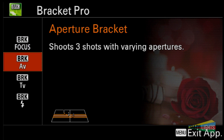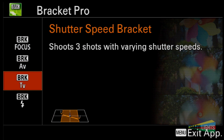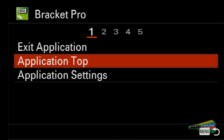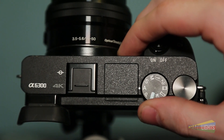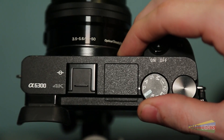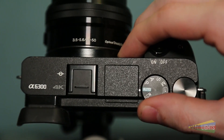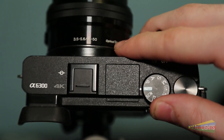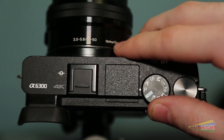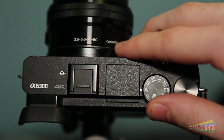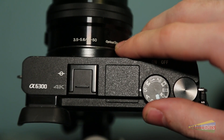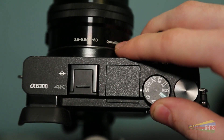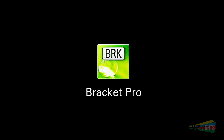My second problem with the app is the process of switching bracketing modes. You must first switch through the menu by going to Map Top and then switch modes on your camera's dial. It makes no sense why they wouldn't allow you to switch modes by using the dial alone. Very annoying, Sony. Maybe you can fix this in an update.